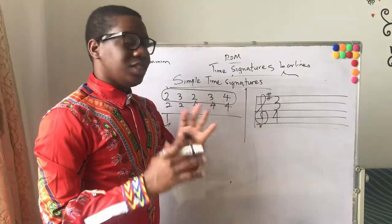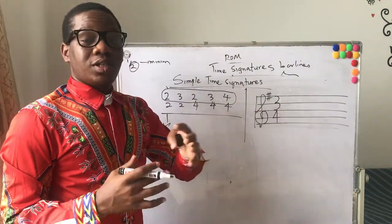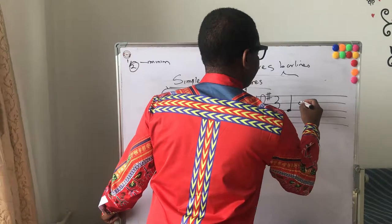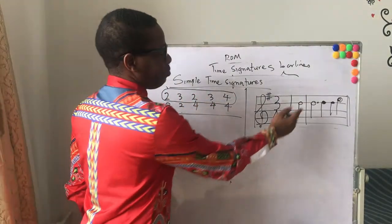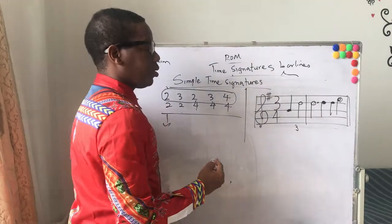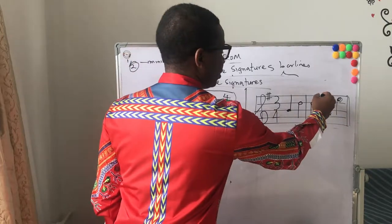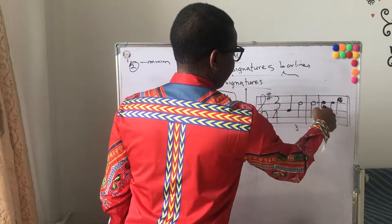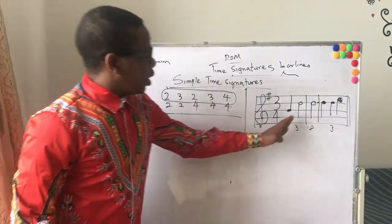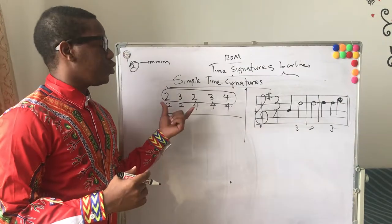Let's look at this on the stave. With three-four, three crotchet beats in a bar means in a single bar you cannot have more than three beats. If I have a note here and another one, that's one and two making three. Remembering dotted notes — a dotted minim is two beats plus half of two, which is three. So one-two-three, and that's three beats. Each bar cannot exceed three beats.